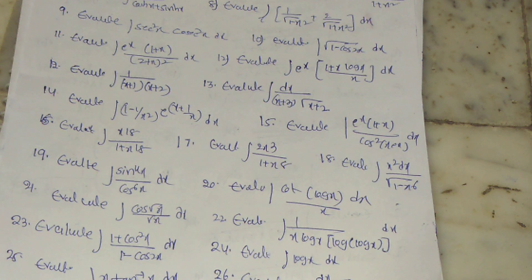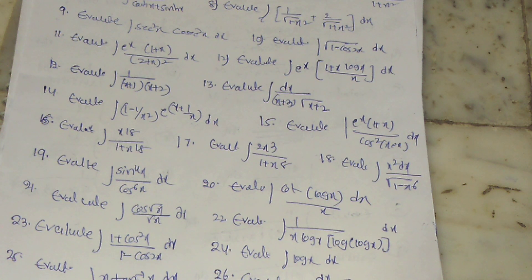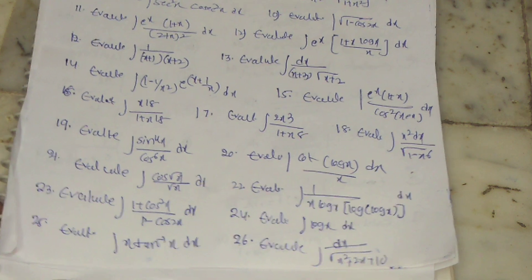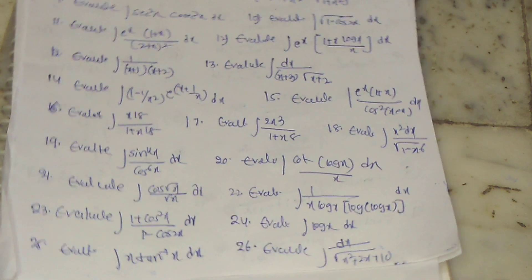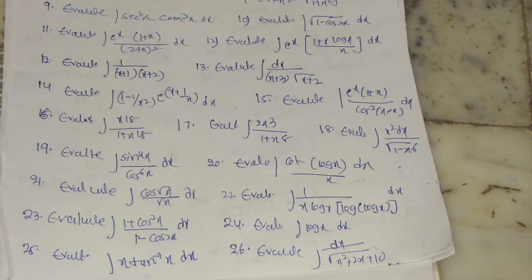Twentieth question: evaluate integration of cot(log x)/x dx. Twenty-first: evaluate integration of cos√x / √x dx. Twenty-second: integration of 1 / [x · log x · log(log x)] dx. Twenty-third: evaluate integration of (1 + cos²x)/(1 − cos 2x) dx. Twenty-fourth: evaluate integration of log x dx. Twenty-fifth: evaluate integration of x · tan⁻¹x dx.